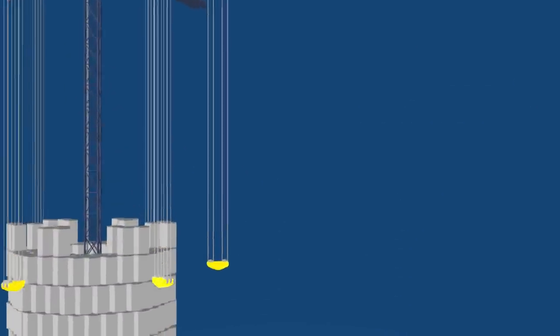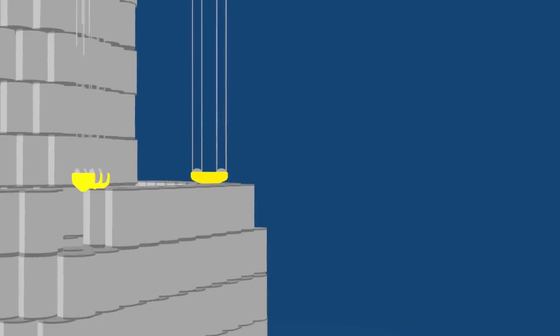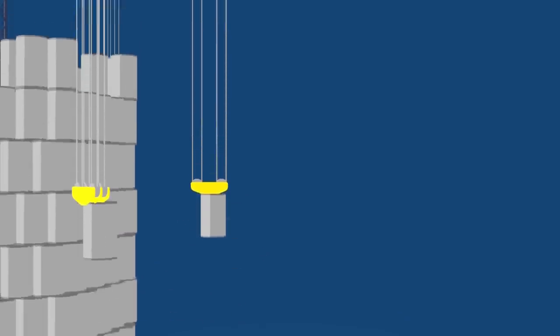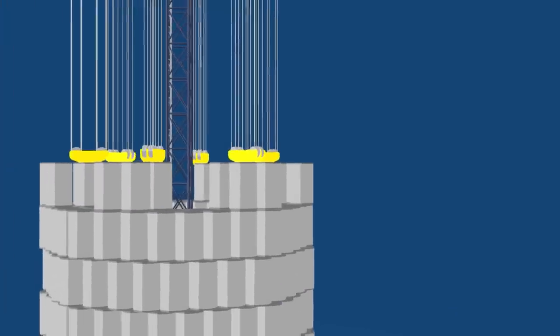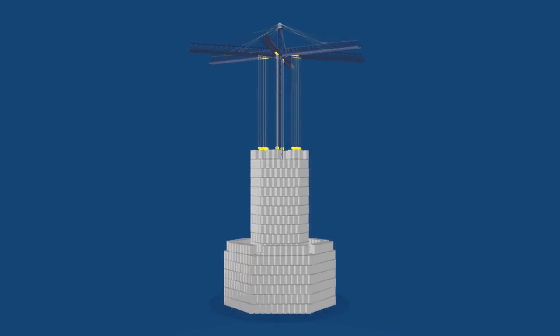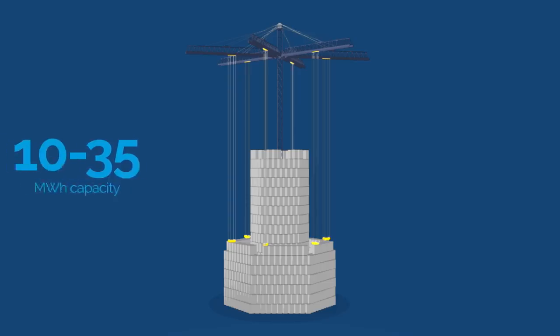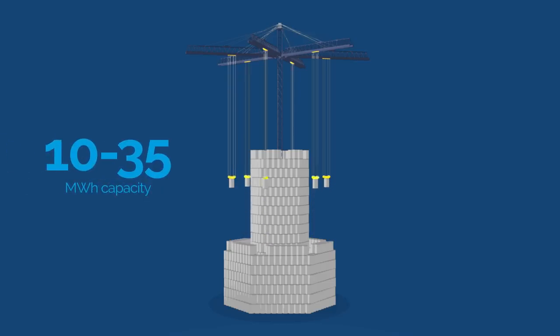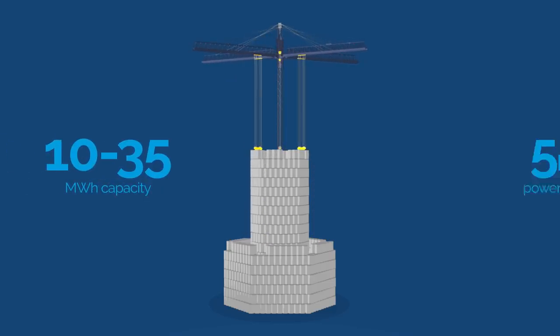As the crane lifts the bricks, the energy is stored in the elevation gain. Electricity powers the electric motors to raise the weights from the base state, building a self-supporting tower, which is the charge state. Each stacked tower of bricks will have a capacity of between 10 and 35 megawatt hours and a power output of up to 5 megawatts.